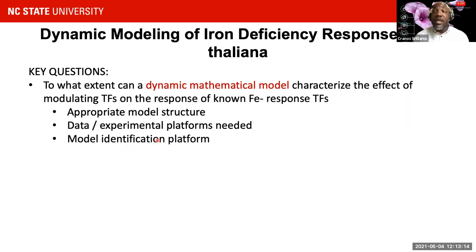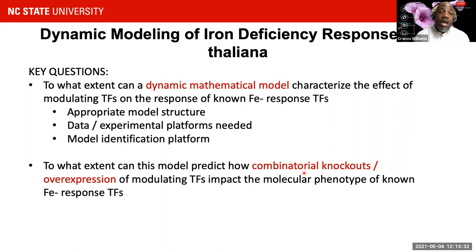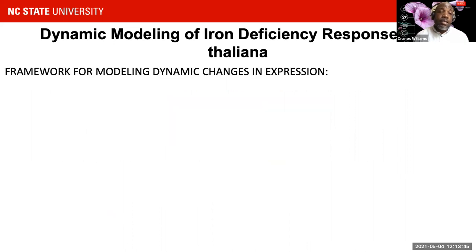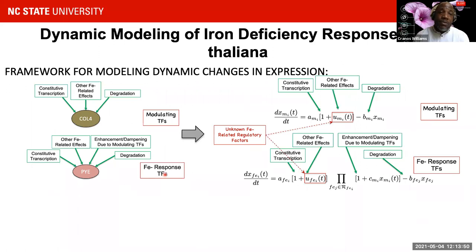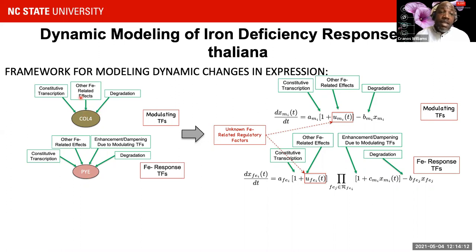Key questions we initially had: to what extent could we create a dynamic mathematical model characterizing the effects of modulating transcription factors on iron deprivation response genes? Can we identify an appropriate model structure? Can we assess whether the current experiments were sufficient to identify an adequate model, and if not, identify what additional data would be needed? Could we then move forward with a model identification platform to assess how combinatorial knockouts modulate the overall response of the iron response genes and validate whether the model could correctly predict outcomes?